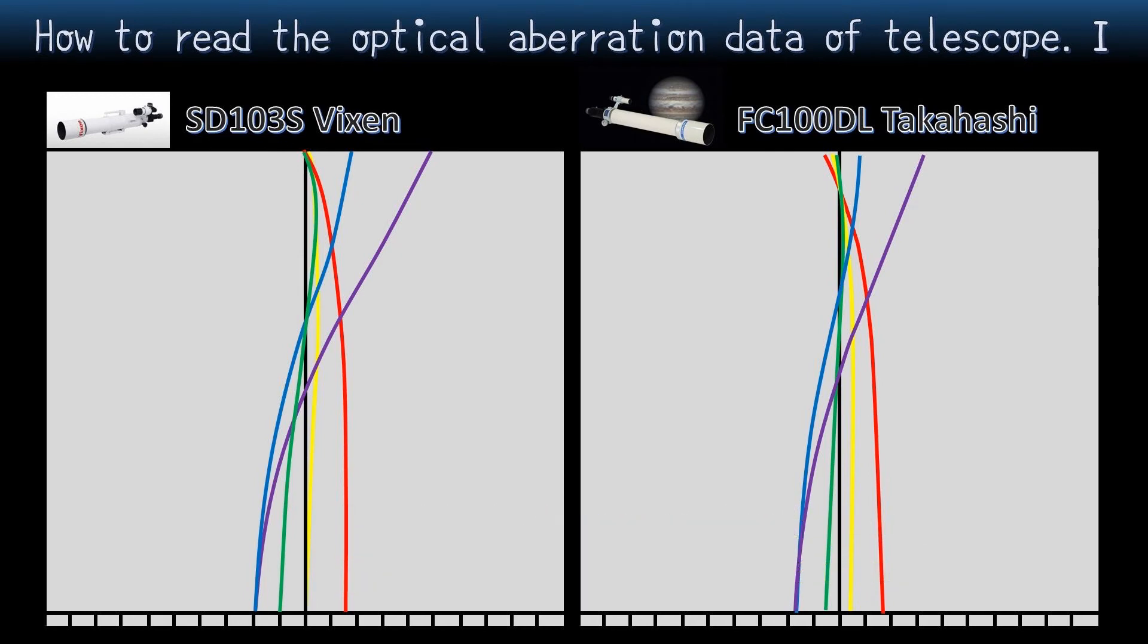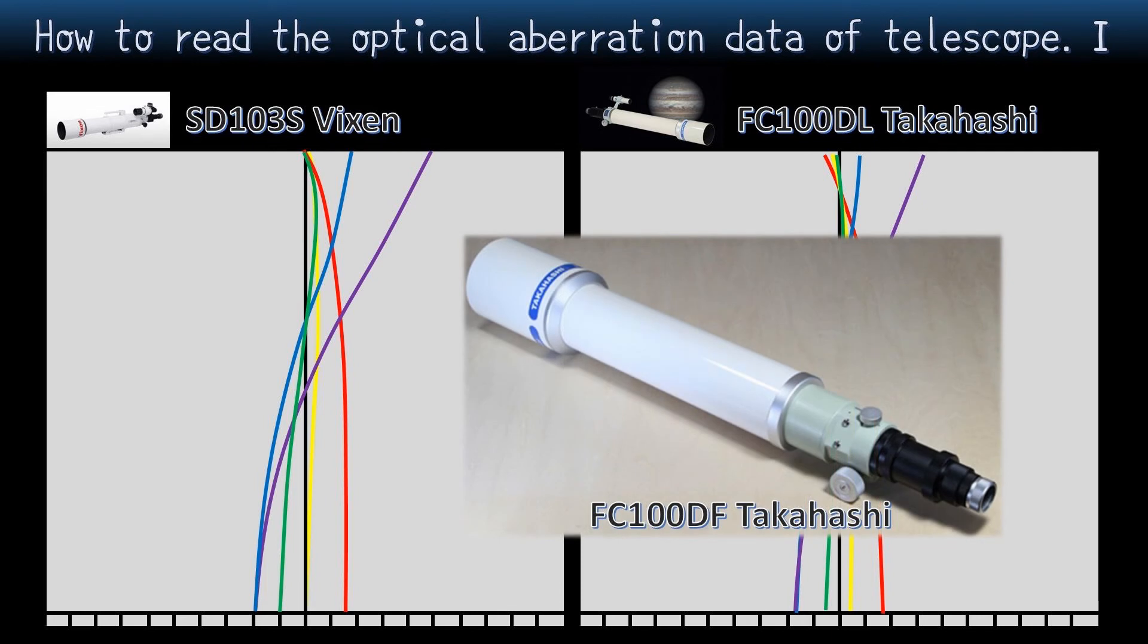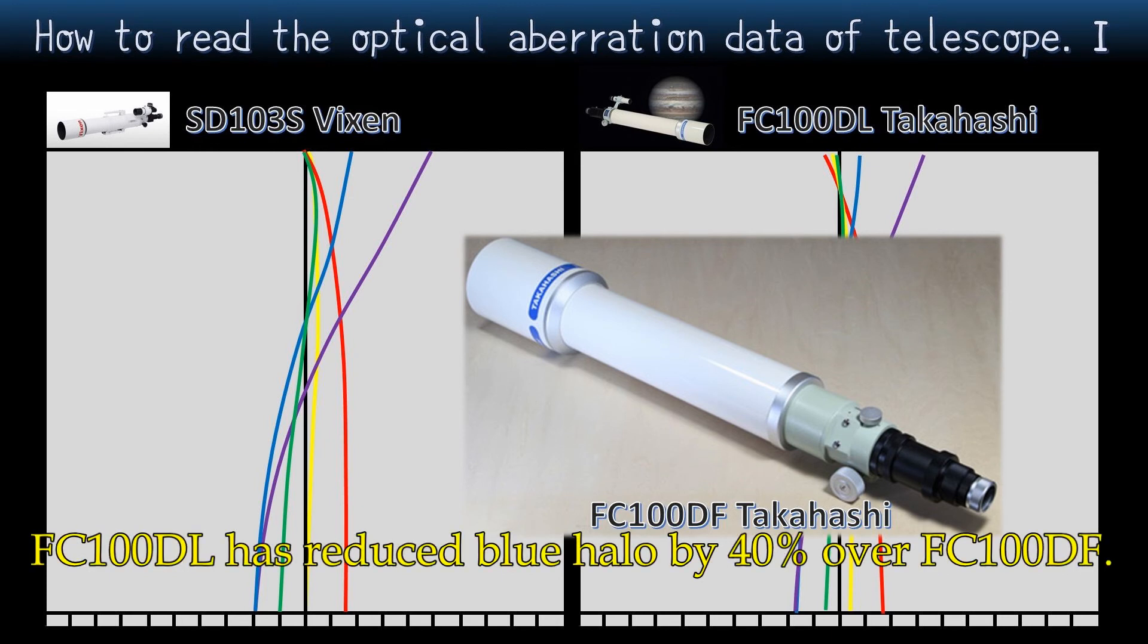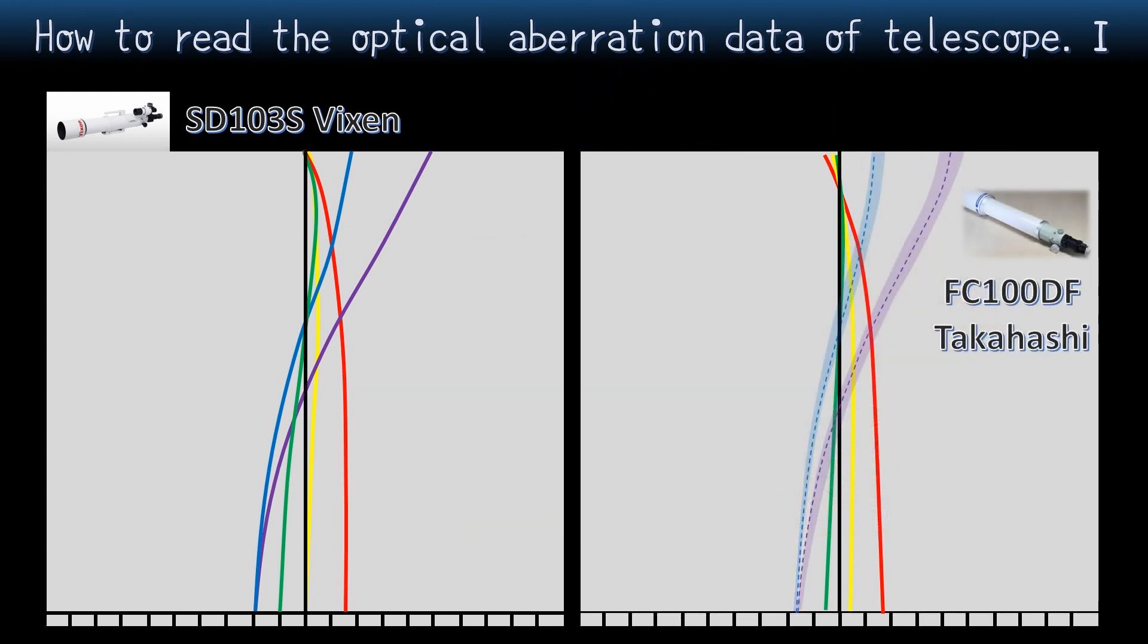By the way, Takahashi has another type of telescope similar to this one. It is a little short type such as FC-100DF or DC. However, Takahashi has not made public its diagram. But Takahashi said that FC-100DL has reduced blue halo by 40% over FC-100DF. From this word, we can imagine the aberration diagram of FC-100DF. And this is the estimation graph of FC-100DF.